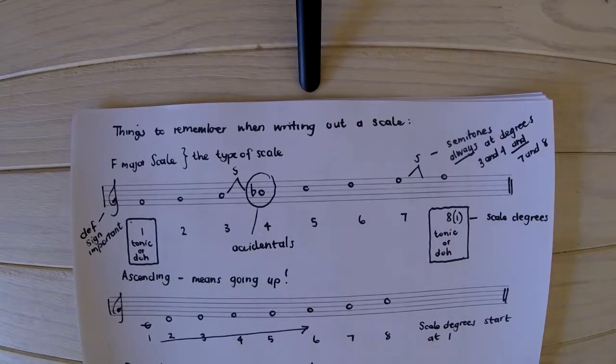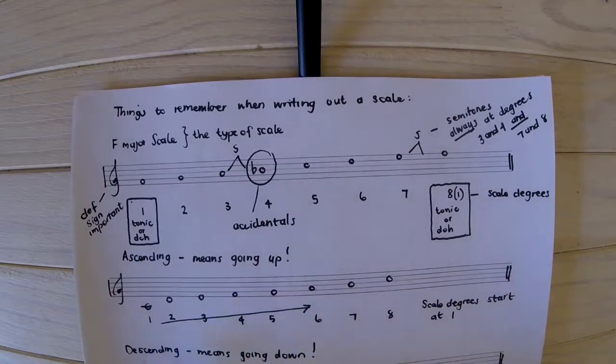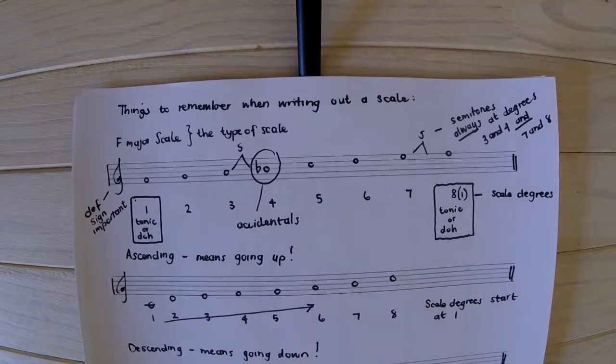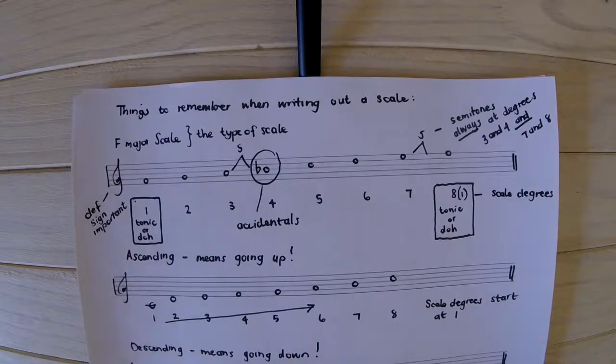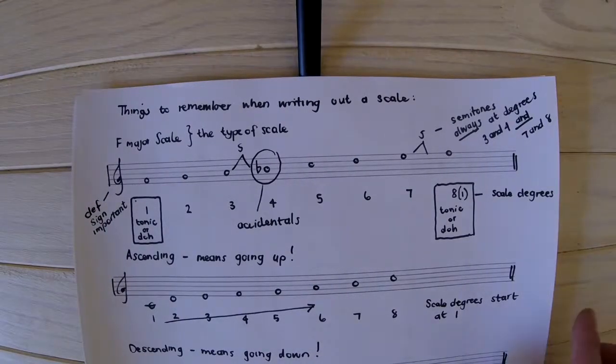That's very, very important. And remember, ascending means going up. Now here I took the C major scale. So ascending means going up, so the degrees start at 1. But descending means going down, so the degrees start at the 8th degree going down.